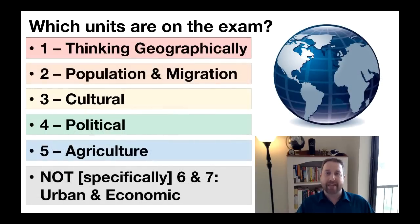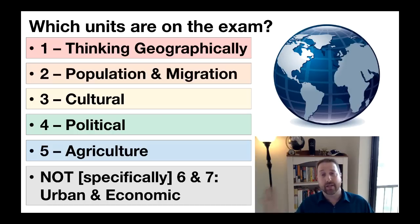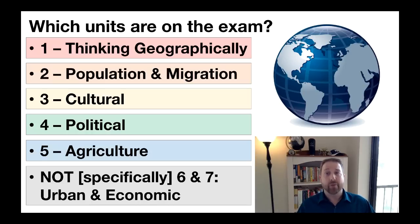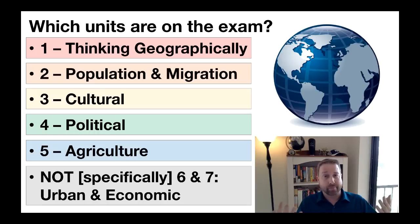Each FRQ will be based in a primary unit, plus at least one point within the question will be drawn from another unit. Each FRQ will be drawn from a different primary unit — so if question 1 is on political geography, you won't see political as the focus on question 2. Most, if not all, of Units 1 through 5 will have at least one point in the FRQs. Points can also come from Unit 1, which was not the case before the redesign.